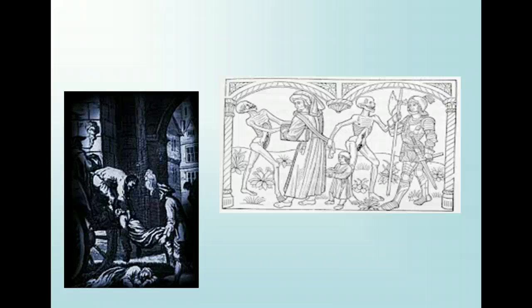From Boccaccio's Decameron: 'Most of them were treated in the same manner by the survivors, who were more concerned to get rid of the rotting bodies than moved by charity towards the dead. With the aid of porters, if they could get them, they carried the bodies out of the houses and laid them at the door, where every morning quantities of the dead might be seen. Then they would be laid out on biers — flat frames with wheels used in funerals — or, as these were often lacking, on tables.'